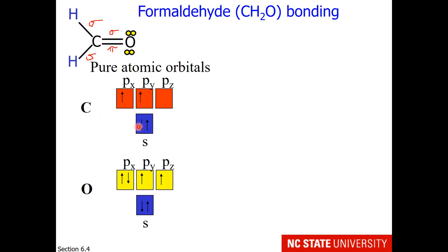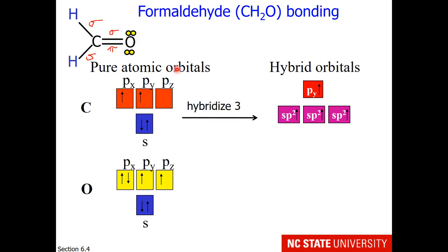Carbon has s and p valence orbitals. It's in group four, so I'll go with four electrons. Oxygen also has s and p valence orbitals, and it's in group six, so I'll have six electrons. How many electron regions are around the carbon? Three. So I am going to hybridize three of carbon's atomic orbitals.